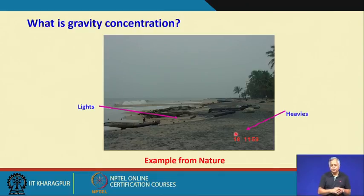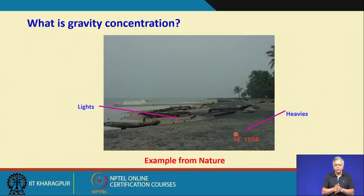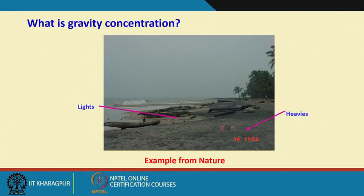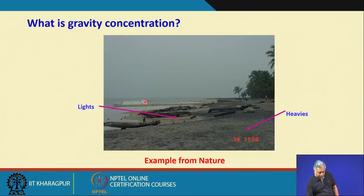These are what we call beach placer minerals, which contain high-density minerals like ilmenite, silmenite, zircon, rutile, and monazite — minerals which are much heavier than sand particles. The dark-coloured particles are the heavy particles. The question is: why are the heavier particles farther from the seashore while the lighter sand particles are here closer to the sea? Why have they travelled so far?